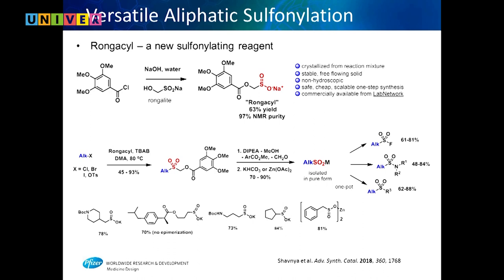Andre was thinking about aryl alkyl sulfonates. He figured out that starting from rongalite — an industrial chemical made on metric-ton scale — you acylate the alcohol, then alkylate the sulfur with alkyl halides. Upon treatment with base, everything collapses leaving you with alkyl sulfonates. You can then use the same chemistry: chlorinate, fluorinate, or alkylate them to make sulfones, sulfonamides, and sulfonyl fluorides in great yields — widening the scope to make sulfur compounds we couldn't make before.